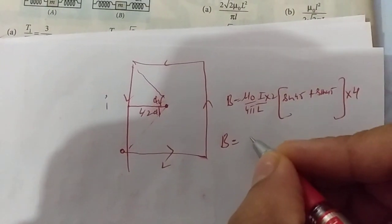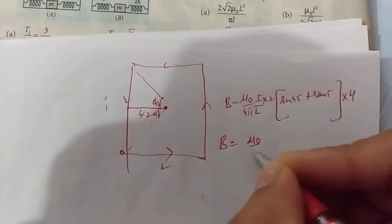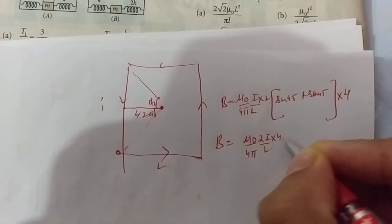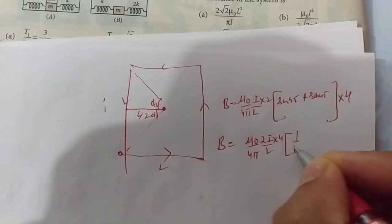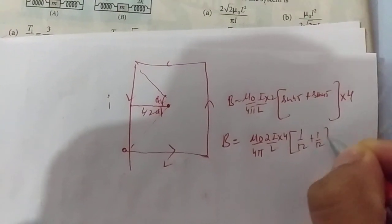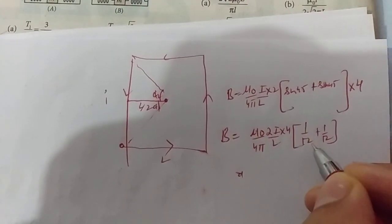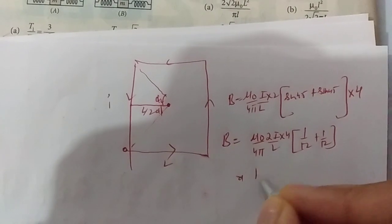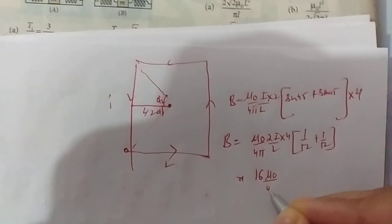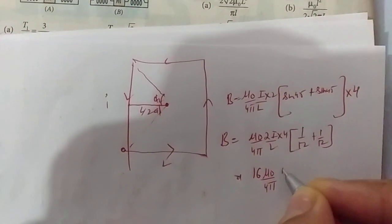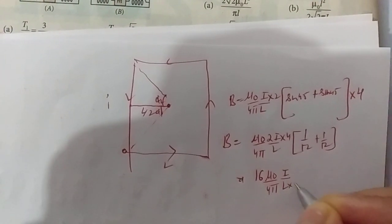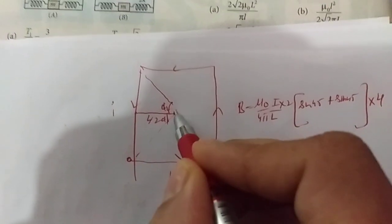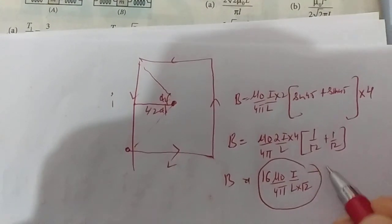So our expression is μ₀/4π × 2I/L multiplied with 4, and sin 45° plus sin 45° which is 1/√2 + 1/√2. This simplifies to 16μ₀/4π × I/(L√2). So that is the magnetic field at the center of this larger coil.